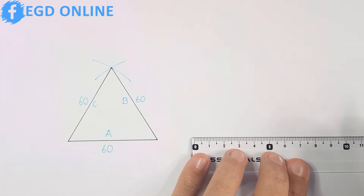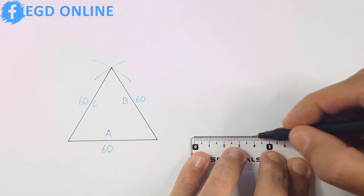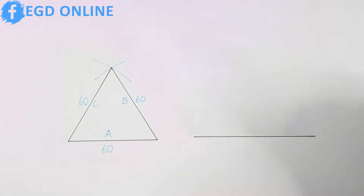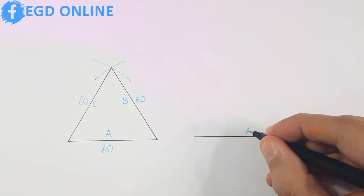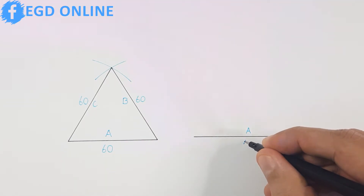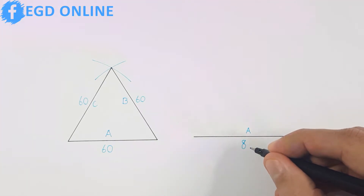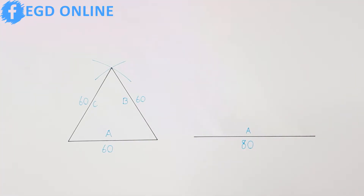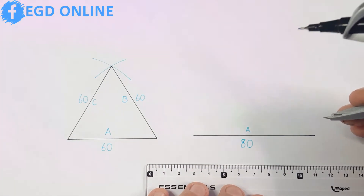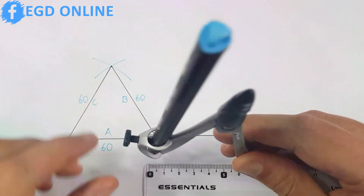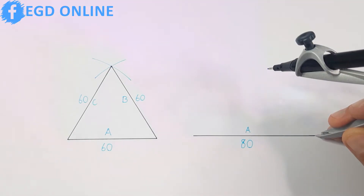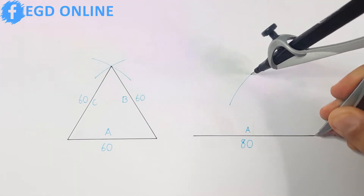For my next example I will construct a triangle that does not have the same side length. I will use the side lengths of 80, 60, and 50. I will then take my compass and adjust it to 60 and place it on one end of side A and draw an arc above side A.